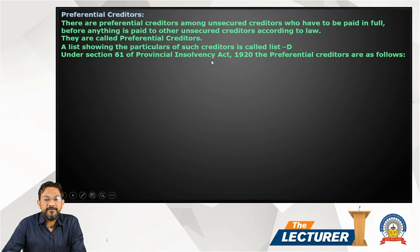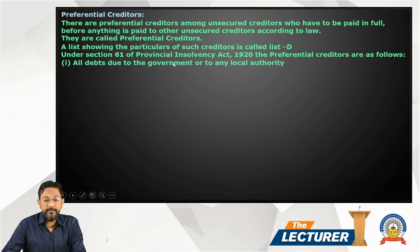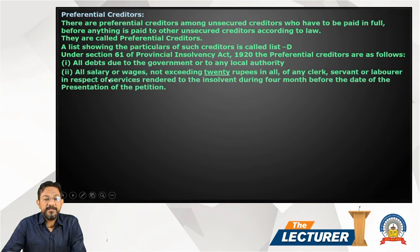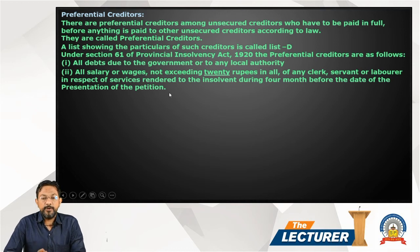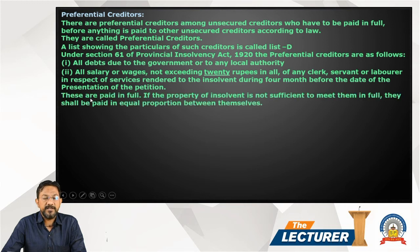Under Section 61 of the Provincial Insolvency Act 1920, the preferential creditors are as follows. First, all debts due to the government or to any local authorities — in short, the government is paid first. Then, all salaries and wages — not exceeding 20 rupees in one month — of any clerk, servant, or labourer in respect of services rendered to the insolvent during the four months before the date of presentation of the petition.